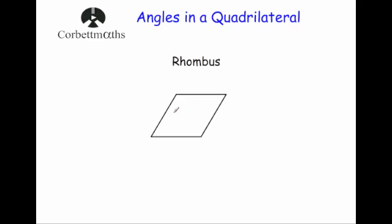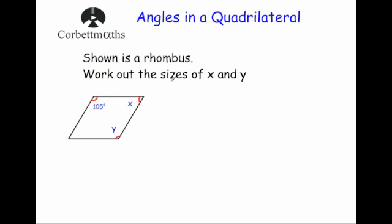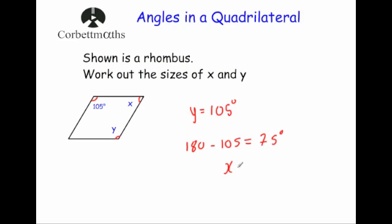Next, a rhombus. Again, the opposite angles are equal to each other, and the acute angle and the obtuse angle add together to give 180 degrees — the same as a parallelogram. So for the question asking for angles x and y: the opposite angles are equal, so if one is 105 degrees, y is also 105 degrees. To get x, take 105 away from 180, which leaves 75 degrees — so x equals 75 degrees.